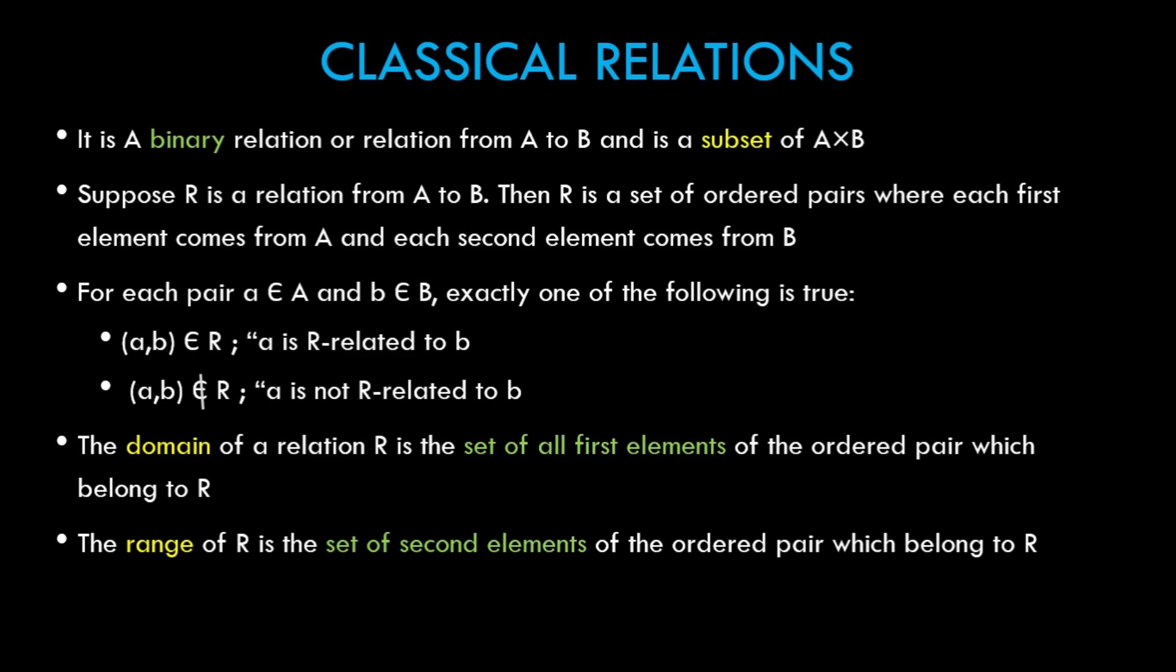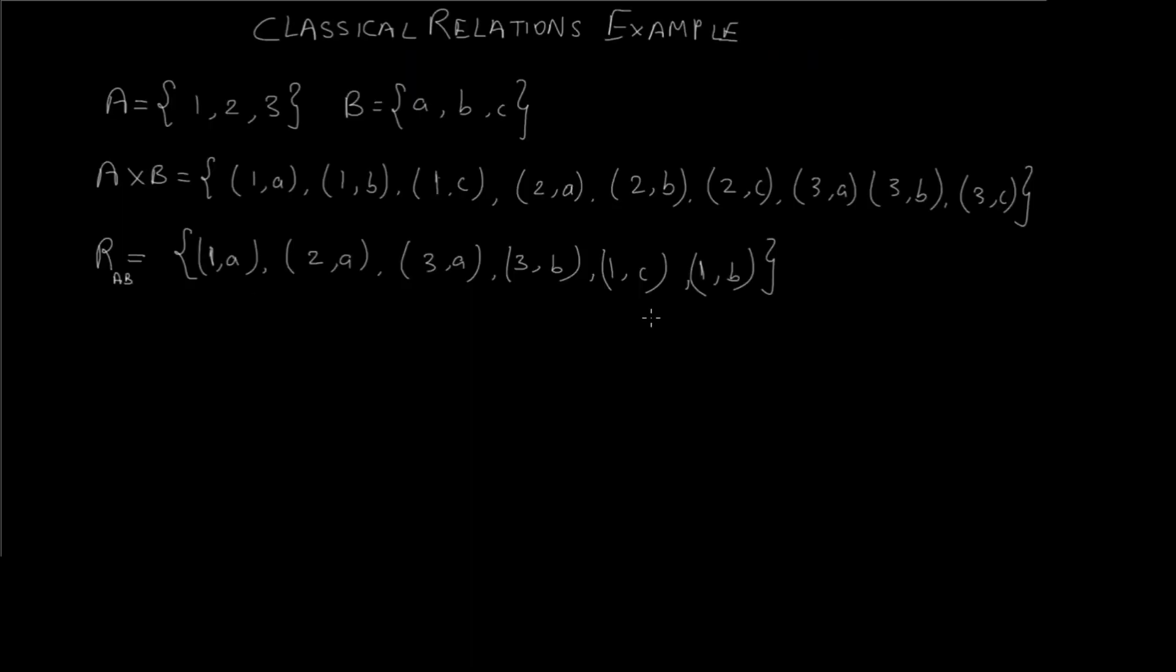And let's see an example in a real world scenario. Okay, so as you can see on the screen we have set A and we have set B, and here we have the Cartesian product which is the ordered pair of all the elements. The first element is from set A and the second element is from set B.